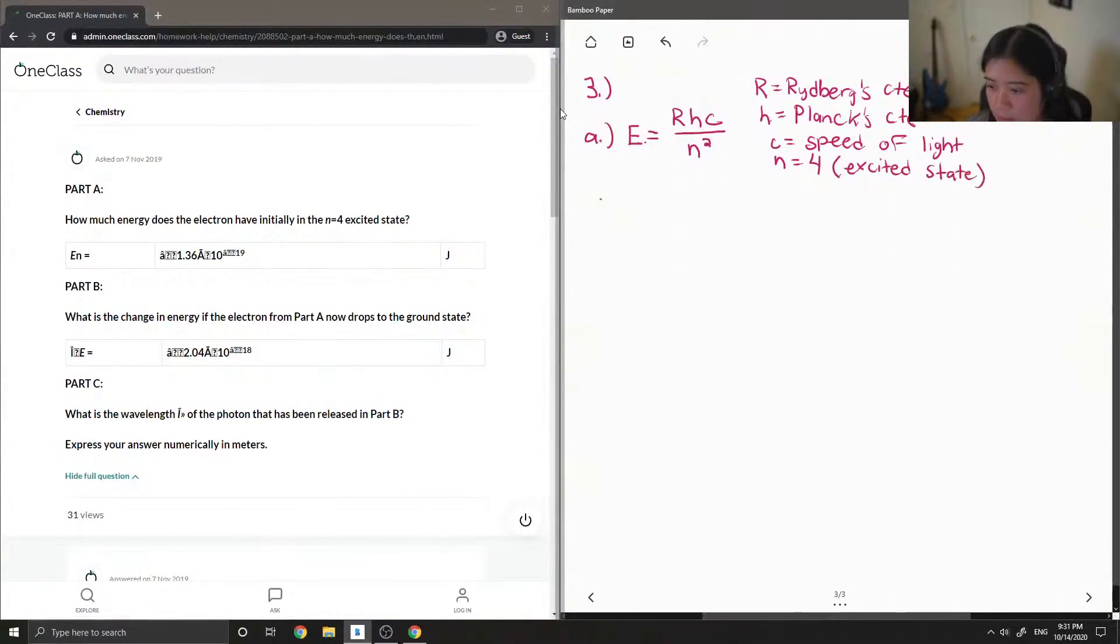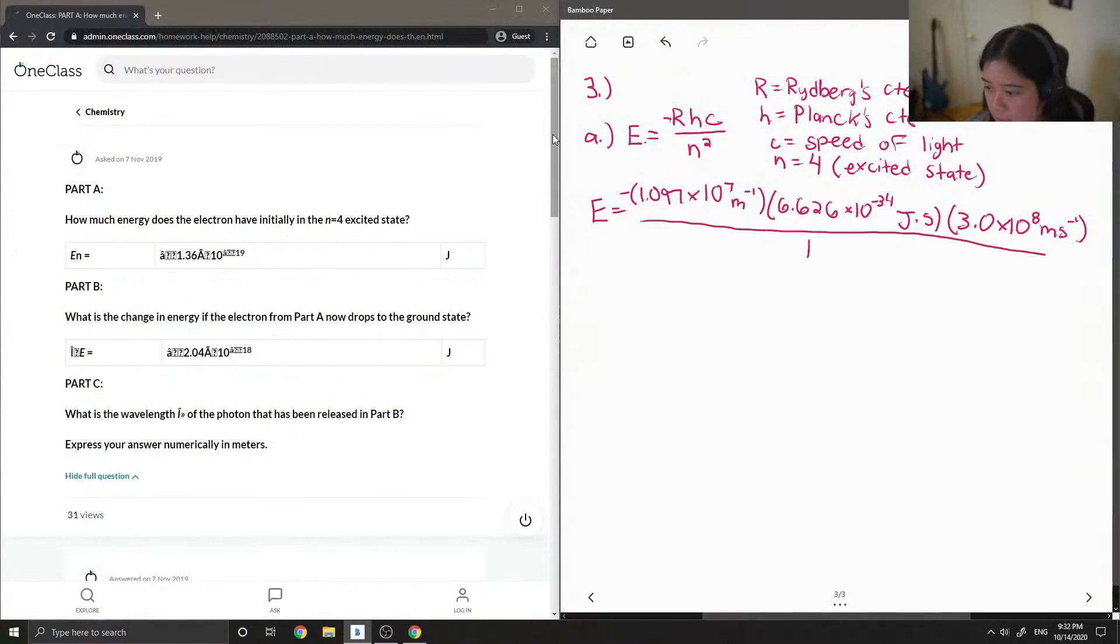Then all you have to do is plug in all of those values. So R is equal to 1.07 times 10 to the 7 inverse meters. This is multiplied by Planck's constant, 6.626 times 10 to the negative 34 Joules times seconds. Speed of light C to remember is 3 times 10 to the 8 meters per second. All of that over 4 squared.